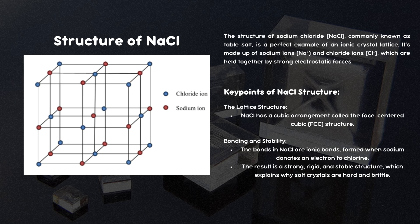The structure of sodium chloride, or commonly known as table salt, is a perfect example of an ionic crystal lattice. It's made up of sodium and chloride ions which are held together by strong electrostatic forces.